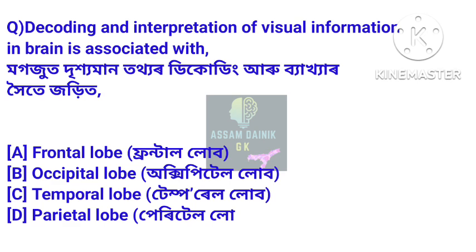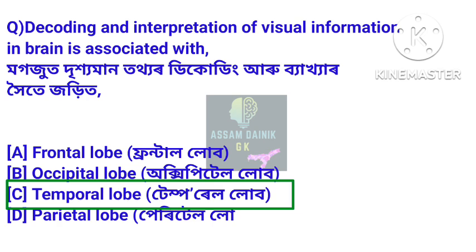Question 6: Decoding and interpretation of visual information in the brain is associated with which part? Magozut drissoman toithar dikuding aru bai khar hoite zori ta. Answer: Temporal lobe. Temporal lobe hol magozut drissoman toithar dikuding aru bai khar hoite zori ta.